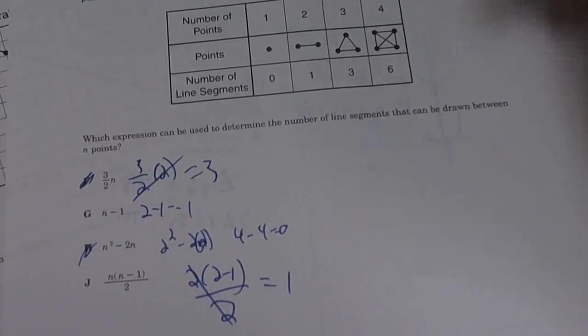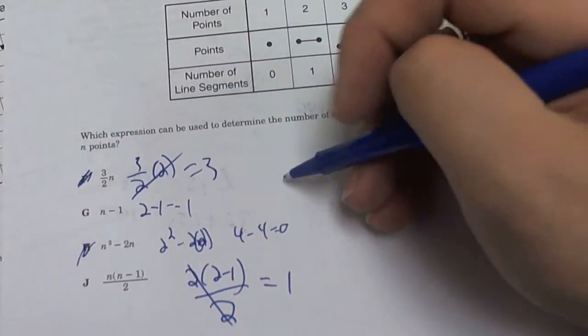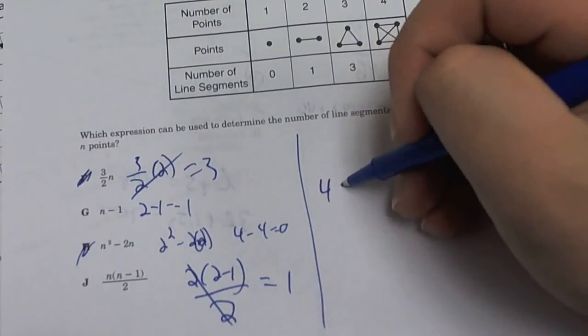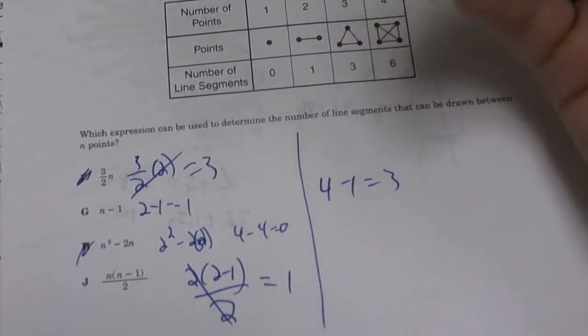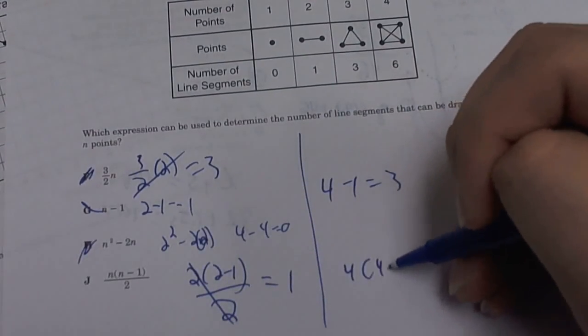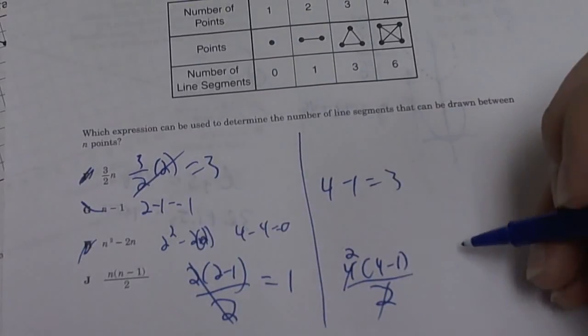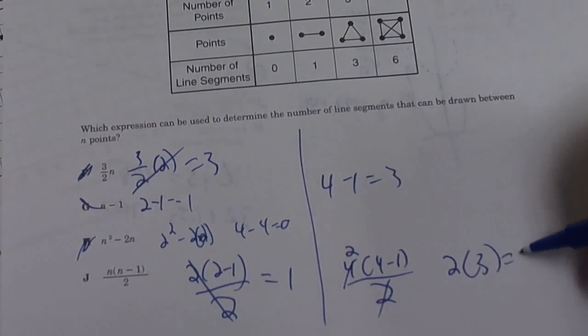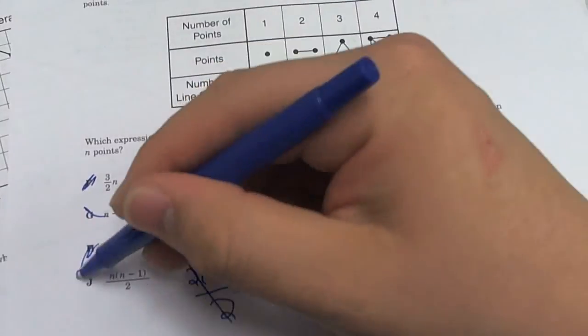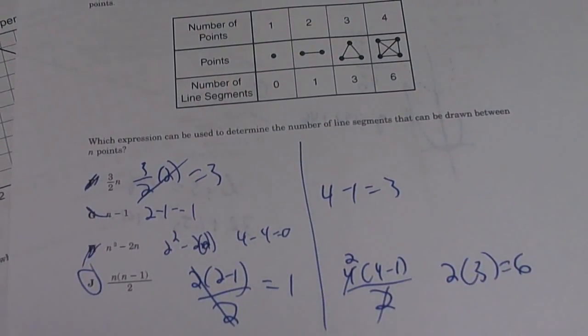Now let's go to the biggest one. So 4. Plug in 4, you have to get 6. So plug in 4. 4 minus 1 is equal to 3. It's not 6. So that's wrong. Let's go to J. 4 times 4 minus 1 divided by 2. The 2 goes into the 4, you're left with 2. So you're left with 2 times 3 which is equal to 6. So the answer is J. n times n minus 1 divided by 2.